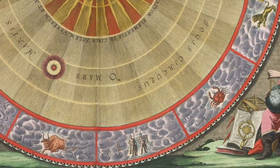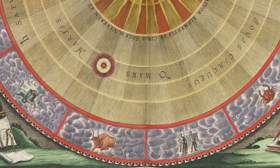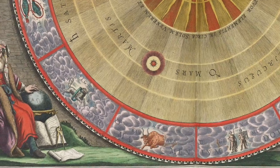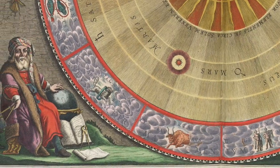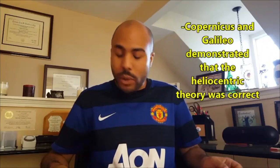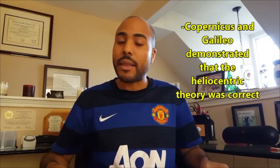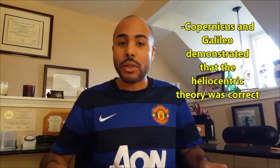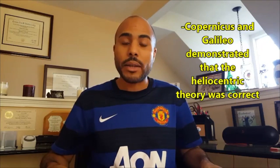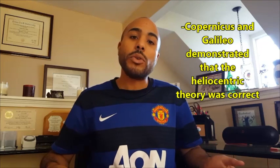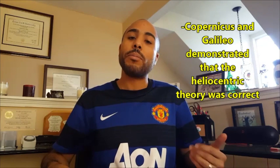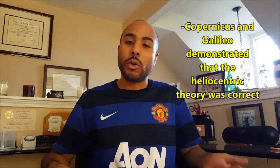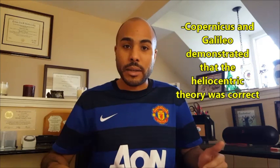Contributions of Galileo and Copernicus in particular: they were the ones who demonstrated that the heliocentric theory was correct — the first two to actually prove that the earth goes around the Sun.